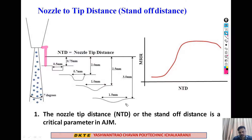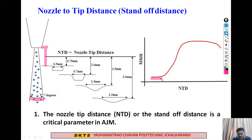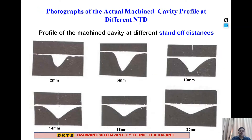This is a very critical criteria. If we plot MRR on the y-axis and the nozzle tip distance on the x-axis, the MRR reaches a maximum at a particular standoff distance. These are photographs of actual machined cavity profiles at different nozzle tip distances, showing how cavity shape changes with standoff distance.